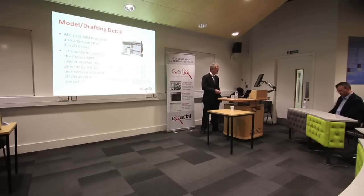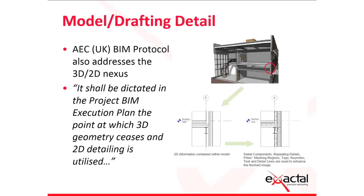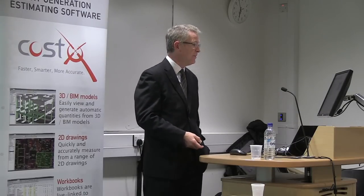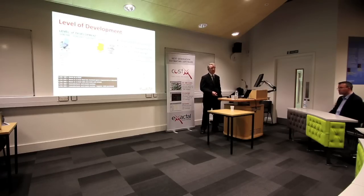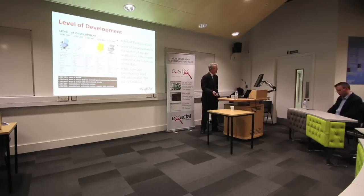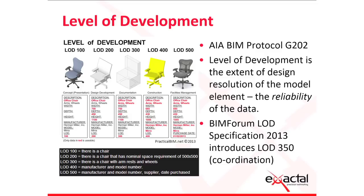The AEC protocol also addresses the 3D/2D nexus. It states it'll be dictated at which point 3D geometry ceases and 2D detailing is utilised. You can't model everything in 3D, and sometimes it's better to use 2D — for example, a furniture arrangement is easier to work on as a plan. This also reduces model size, because too much information makes the model unwieldy: the file size is too big and people downstream can't handle it.